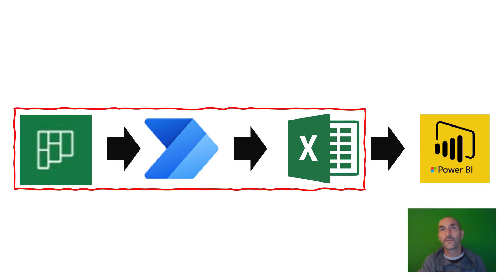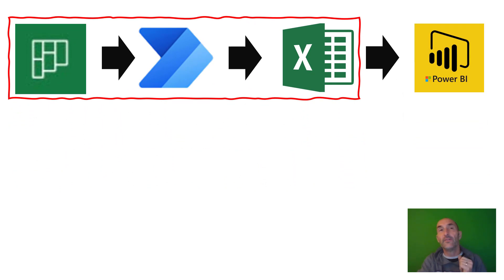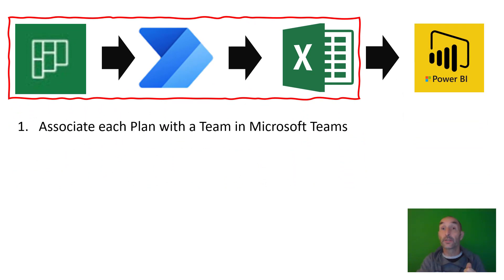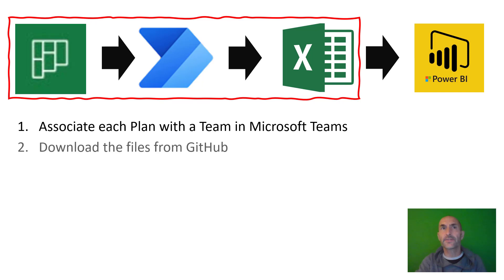So it's really two portions of this. The first is getting the data from Planner into Excel. There are a few things we need to think about in order to do that. The first is that each plan we want to synchronize has got to be associated with an Office 365 group via Microsoft Teams. We need to do that because each segment of the flow will go and query Microsoft Teams, find what groups are associated, and then find what plans are associated with that group.